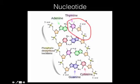So the nucleotide has three parts. The first part is right here, this is the phosphate. This is the sugar or the deoxyribose, and then this part right here is the nitrogen base.